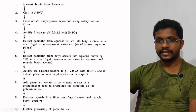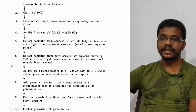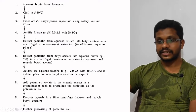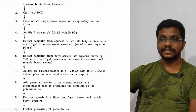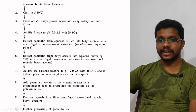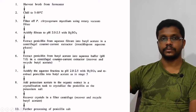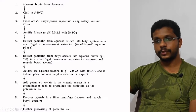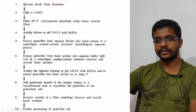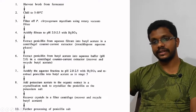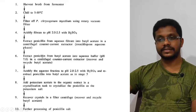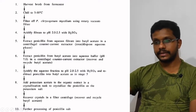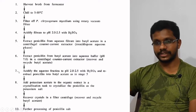In the seventh step, we repeat the process once again: acidify the medium, extract into butyl acetate, then adjust the pH to 7 and extract into the aqueous buffer. That seventh step involves repeating steps 4 through 6.